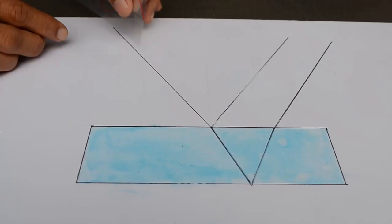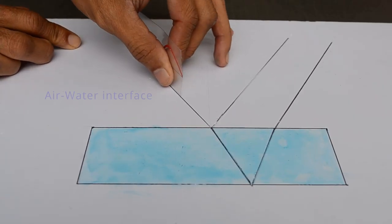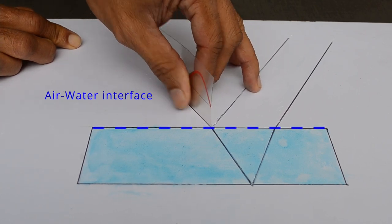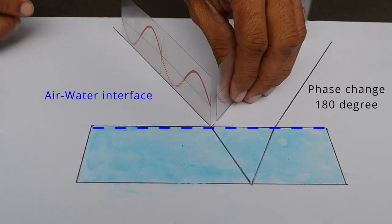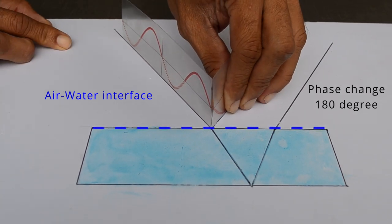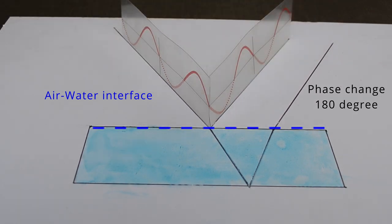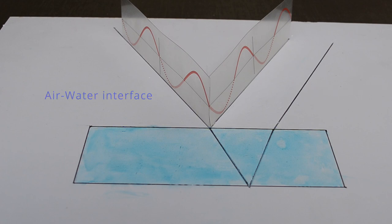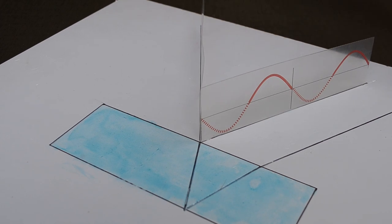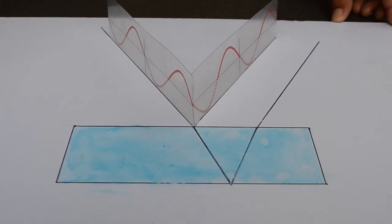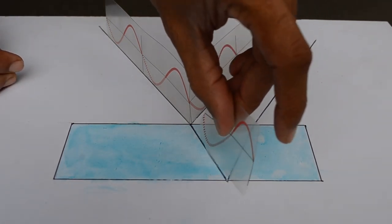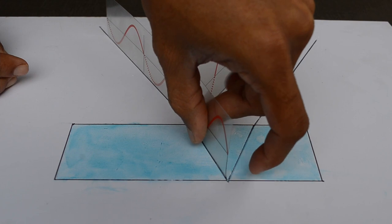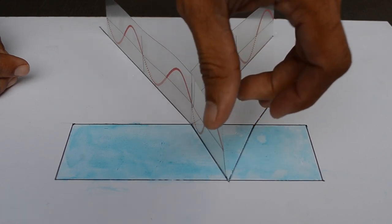Let us understand phase shift at various interfaces. This is an incident ray. At the air-water interface, some part of it gets reflected and some will be refracted. As per Stokes relation, there will be a phase change when wave is reflected from a denser medium. Reflected ray starts with a dotted line as there is a phase change of 180 degrees or half the wavelength. Some part of the incident ray gets refracted at the air-water interface. There is no phase change on refraction.